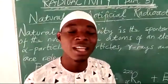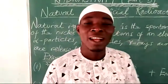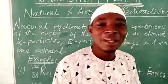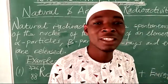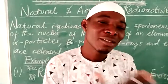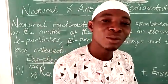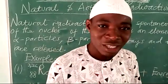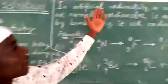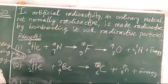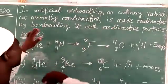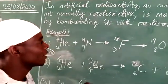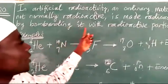Sometimes radioactivity can involve atoms being irradiated, meaning exposed to radiation either intentionally or by accident. When substances are irradiated by attacking them with fast-moving particles such as alpha particles or neutrons, they can split the atom and make them unstable. This is what we mean by artificial radioactivity. In artificial radioactivity, an ordinary material — not normally radioactive — is made radioactive by bombarding it, meaning attacking it with fast-moving, high-energy particles.